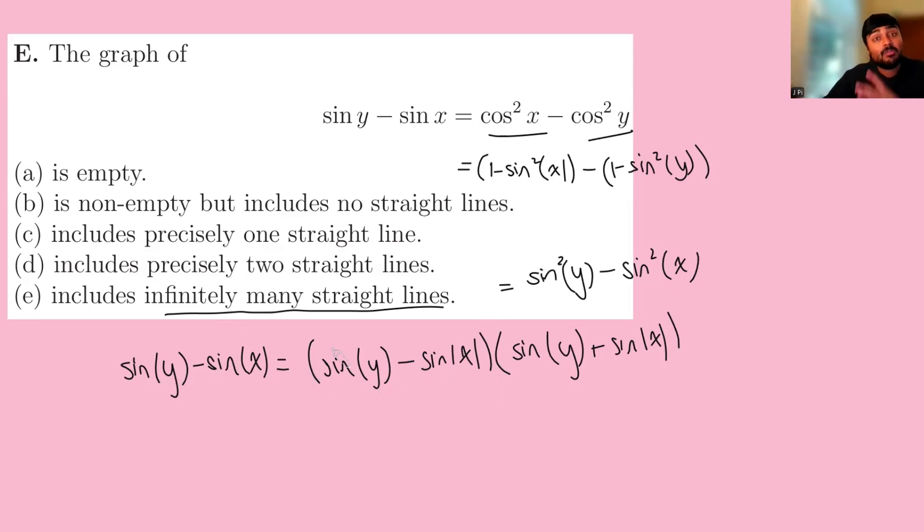What do we do instead? Well, we just bring everything onto one side. So we get sine y minus sine x minus this whole guy here. So minus sine of y minus sine of x, and then sine of y plus sine of x, and that equals zero.